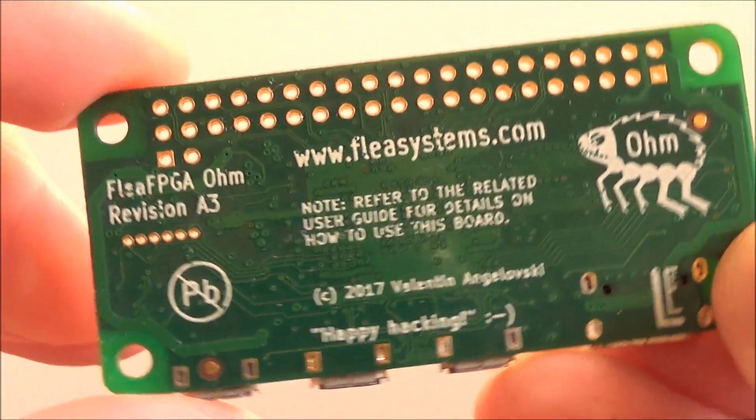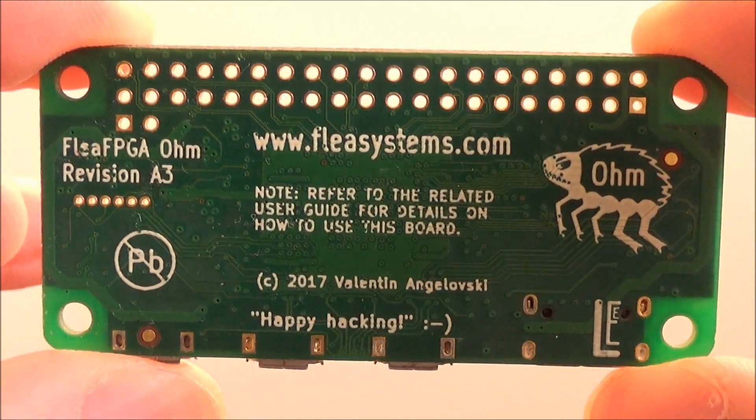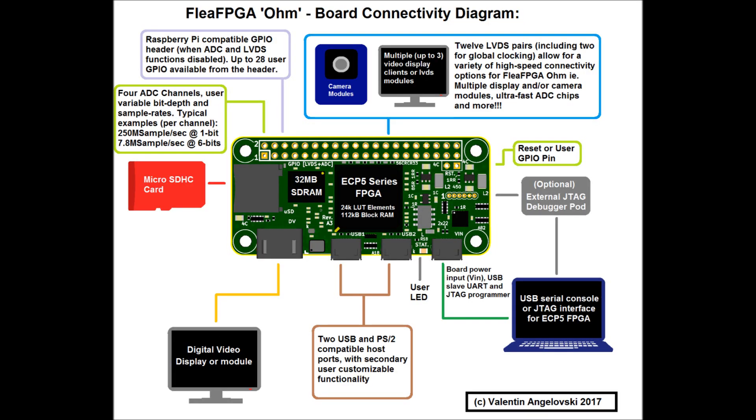It can function either as standalone or as an FPGA coprocessor hat for the Raspberry Pi computer. In standalone mode, FLIR FPGA Ohm provides some neat options like 12 LVDS pairs as well as 4 ADC inputs from the GPIO header as shown in the diagram.